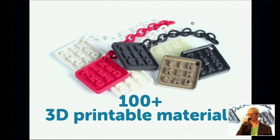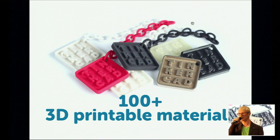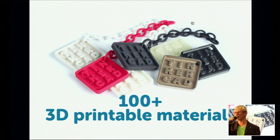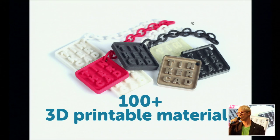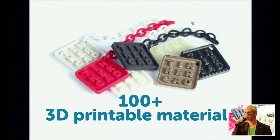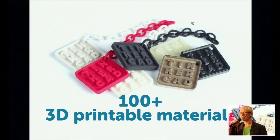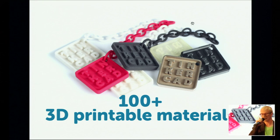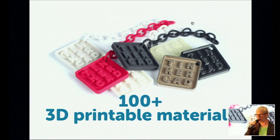There are already over 100 different materials available for 3D printing, and around 20 you can easily order from home. There are all kinds of metals — gold, silver, titanium, stainless steel — dozens of different plastics, ceramic, and even glass. And the materials keep growing.